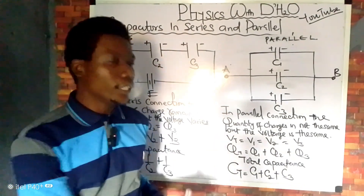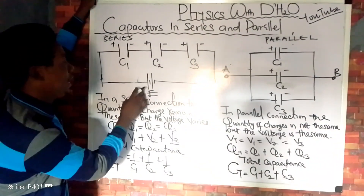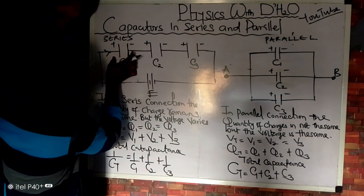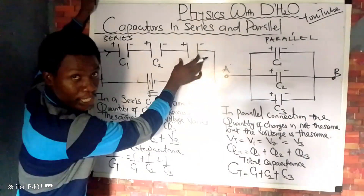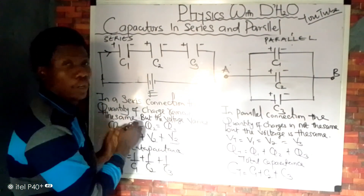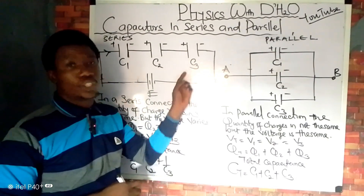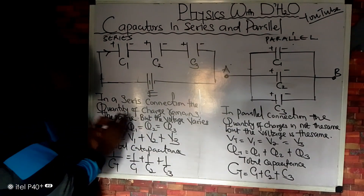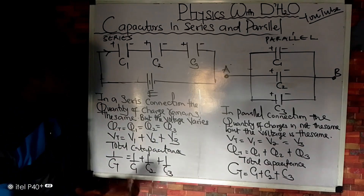Let us look at the diagram. If this is our battery and the current is flowing this way, by the time the current gets to this place, the current that enters this capacitor is the one that is still going to enter this capacitor, and that same current is going to enter this place. So the quantity of charge in the first capacitor is the same as the quantity of charge in the second capacitor, and also the same as the quantity of charge in the top capacitor. That is why we say that in a series connection the quantity of charge remains the same.